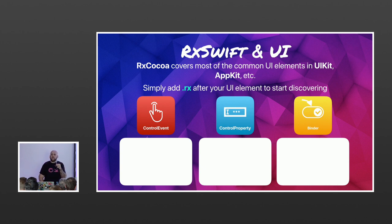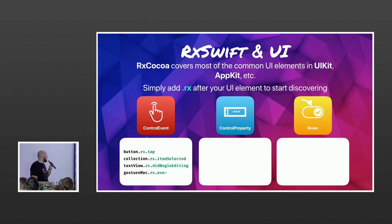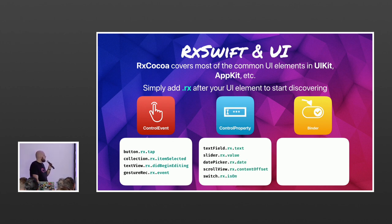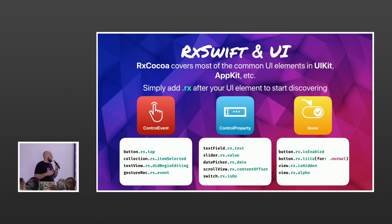RxCocoa provides most of the basic reactive extensions you would use with UIKit. Simply add '.rx' after most of your UI elements and you'll see all available options. For example, button.rx.tap, or textView.rx.didBeginEditing to observe when that control event fires. For ControlProperty, textField.rx.text lets you listen to any change. A datePicker's rx.date lets you react to changes. Binders let you bind streams into isEnabled state, title, isHidden, and more — and you can easily make your own.